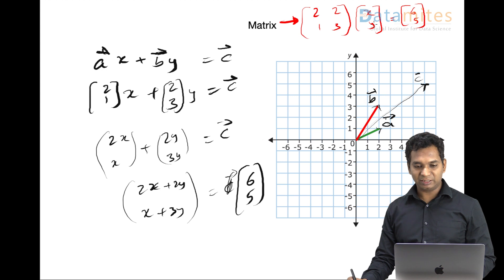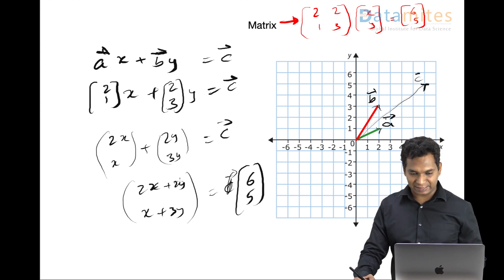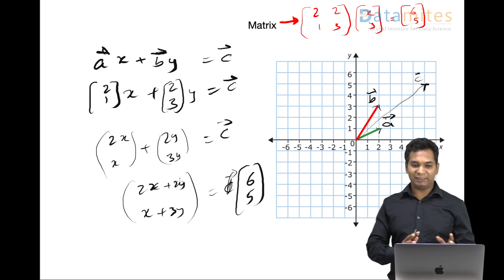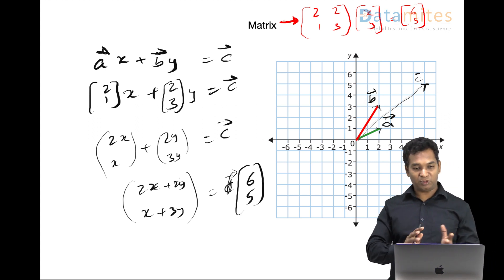And if you simply do the matrix multiplication, if you remember: 2 into x plus 2 into y, and the second item would be 1 into x plus 3 into y, which is exactly what you get here, right?